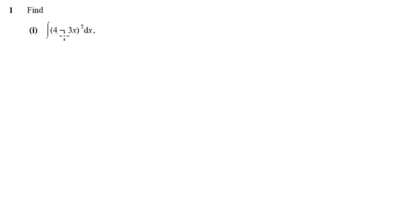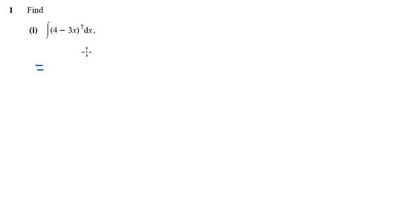Question 1 wants us to integrate this function here, which we can use the inverse chain rule for because we've got this linear function here. So that's going to be 4 minus 3x — we're going to pretend that's an x, add 1 to the power, and divide by the new power.